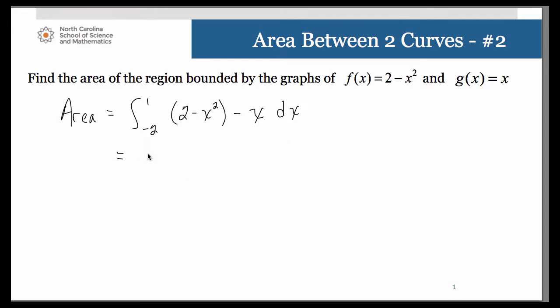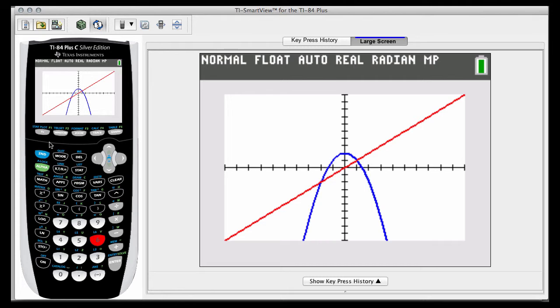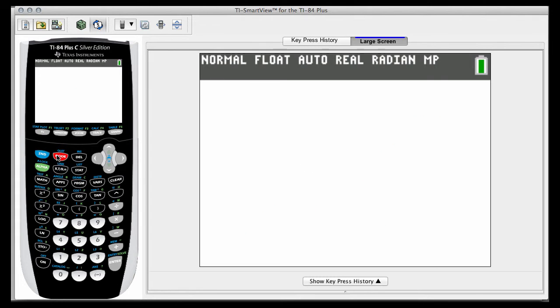So we can go ahead and do our anti-differentiation and evaluate that from negative 2 to 1. So you can do that by hand. I'm going to go ahead and use function integral on my calculator. So math 9 from negative 2 to 1.